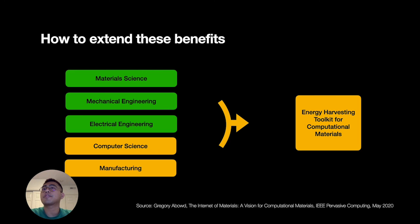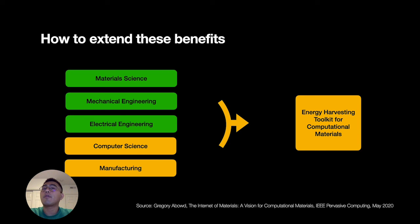So how can we extend these approaches? We can think about domains not only automobiles, but also many different forms of mobility, such as electric scooters or e-bikes. To fully utilize current and novel energy harvesting technologies for computational materials, we need proper tools. This is because novel energy harvesting will require a steep learning curve across many disciplines, such as material science, mechanical and electrical engineering, computer science, and manufacturing. I would like to propose an agenda about how we can design an energy harvesting toolkit for computational materials and its research value.